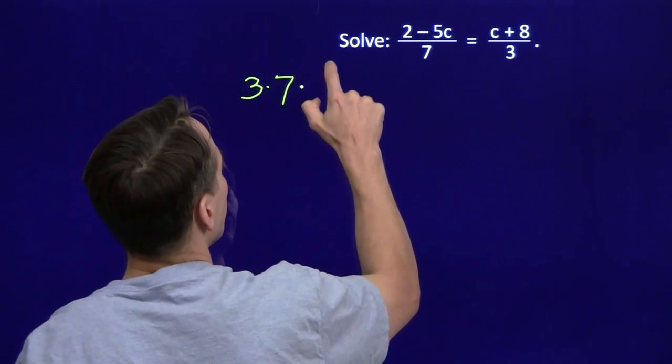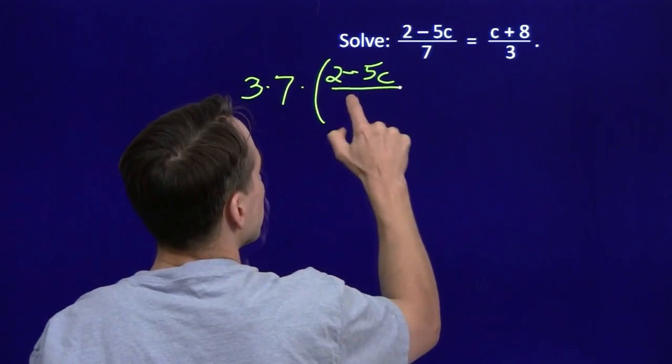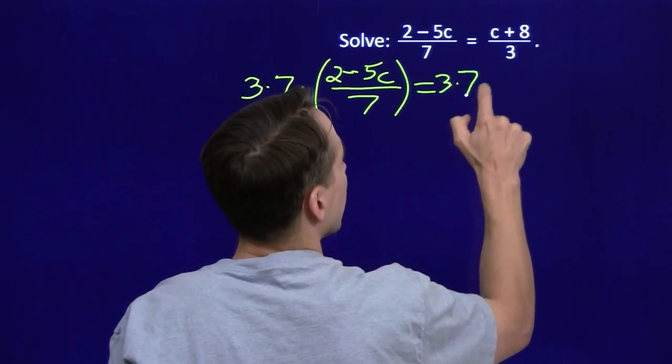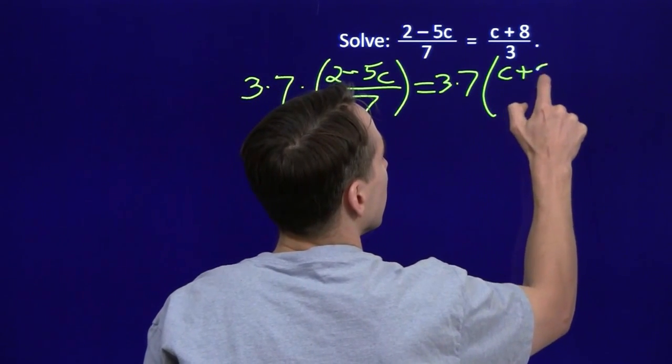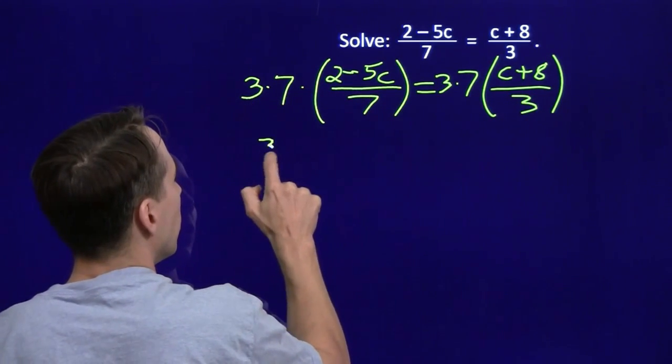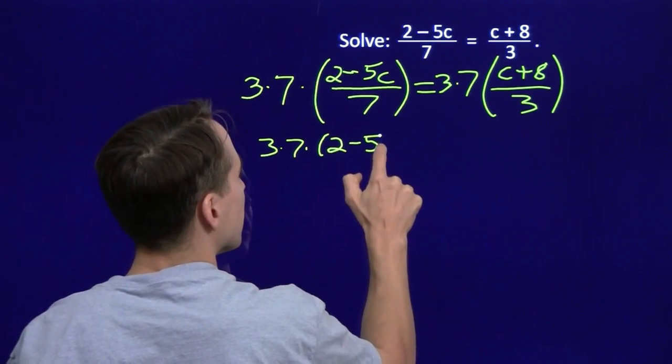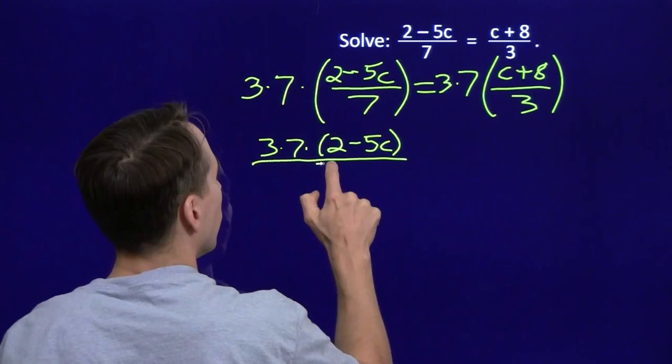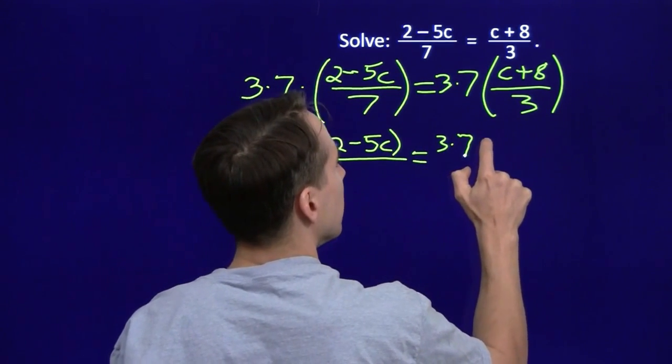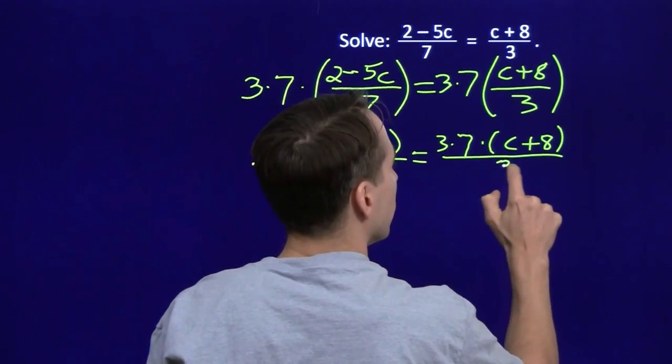So, here we go. 3 and 7. We're going to multiply that by the left side, 2 minus 5c all over 7, and we're going to do the same thing on the right. Can't play favorites. Now we know how to multiply fractions. What we'll have over here is 3 times 7 times 2 minus 5c, all of that over 7. And on the right we'll have 3 times 7 times c plus 8, all of that over 3.